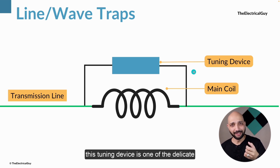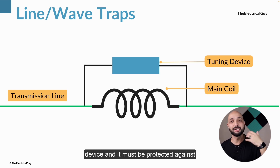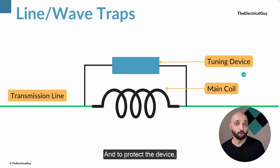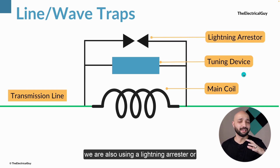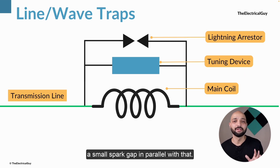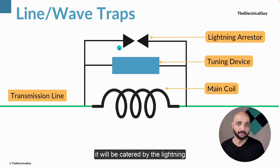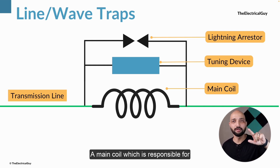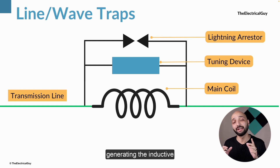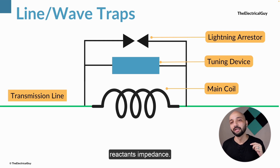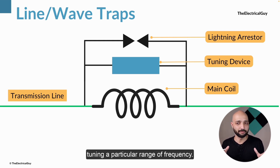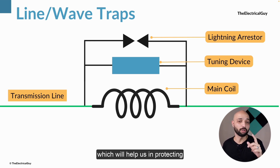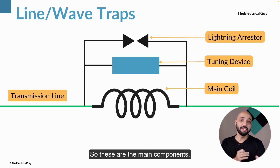The tuning device is a delicate component and must be protected against overvoltages. To protect it, a lightning arrester or a small spark gap is connected in parallel with it. In case a surge occurs, it will be handled by the lightning arrester and the device will be protected. So the basic components of a wave trap are: the main coil which generates inductive reactance, the tuning device which tunes a particular frequency range, and the lightning arrester or spark gap which protects the tuning device.